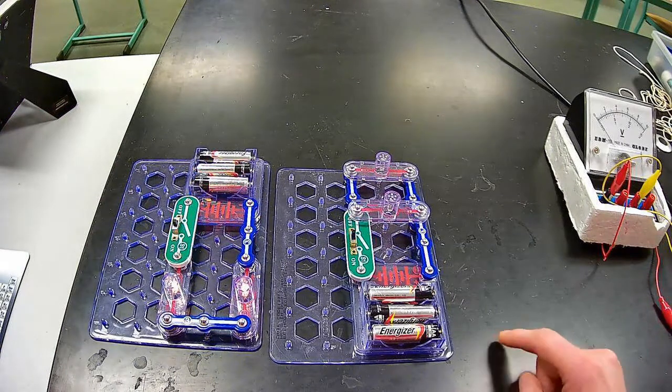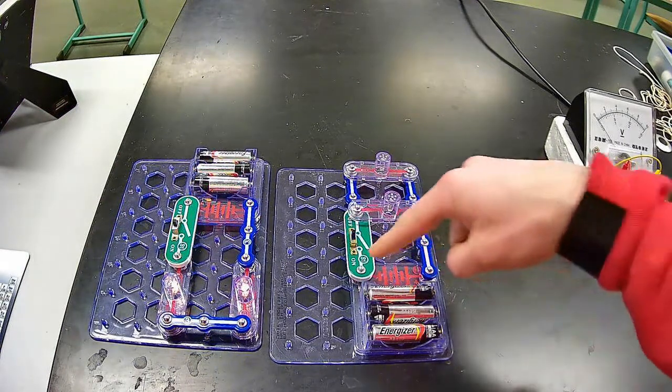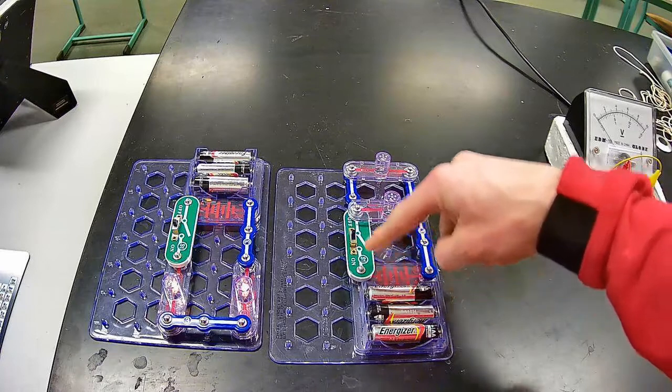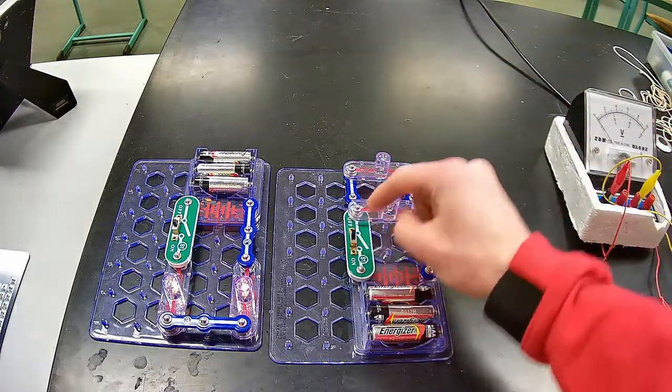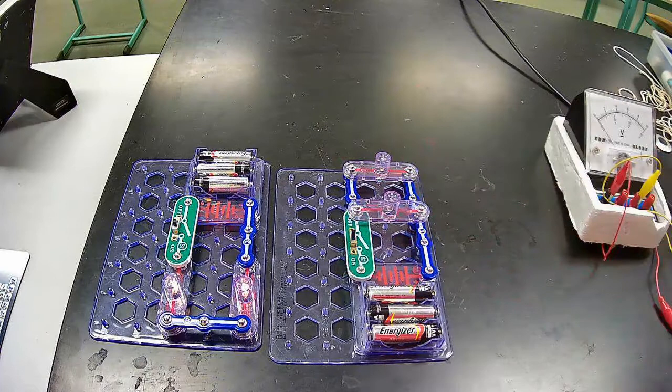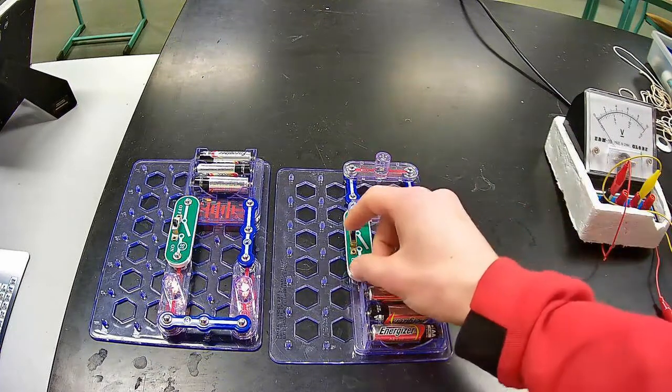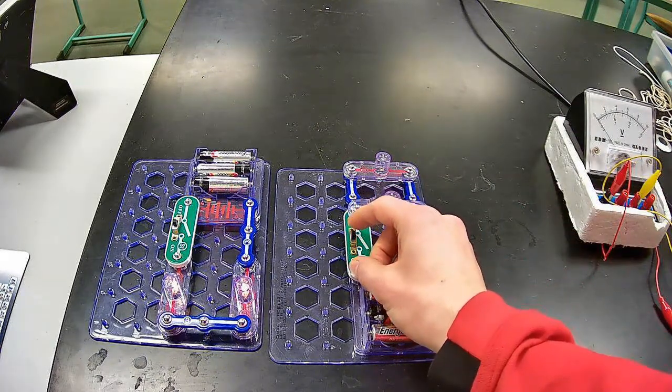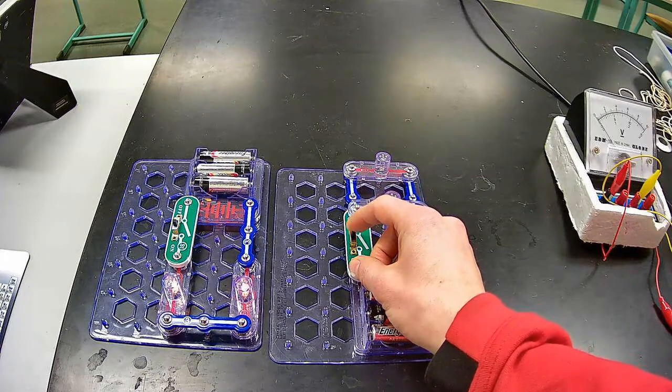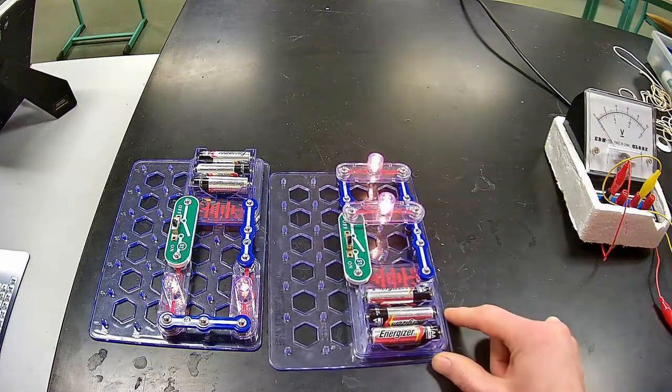And if we were to look at our parallel circuit to our right, again, electrons pushed out of the negative terminal. One direction is still a DC current. However, we have one and two pathways for those electrons to flow. So we have an individual pathway for each of the resistors or light bulbs. So let's turn that on.